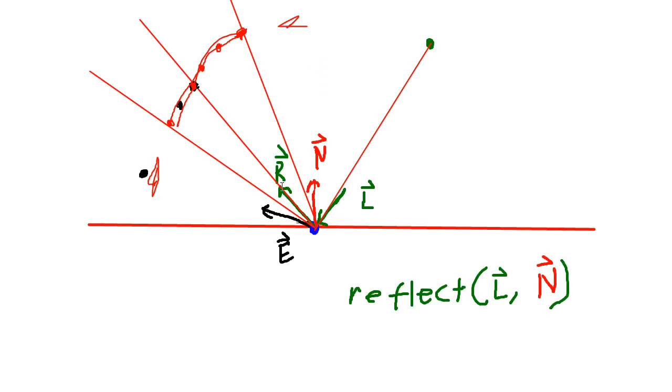So we get the light, we get the reflective vector, the eye vector, we do the dot product, get the cosine between them, and then we'll raise that value to a power depending on how tight we want that shininess. Anyway, that's what we're going to work on in the next video so we can see some specular highlights.